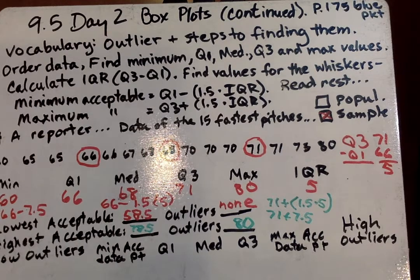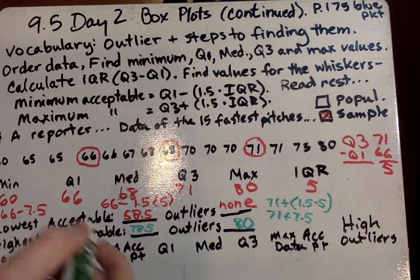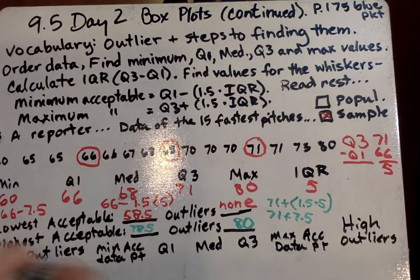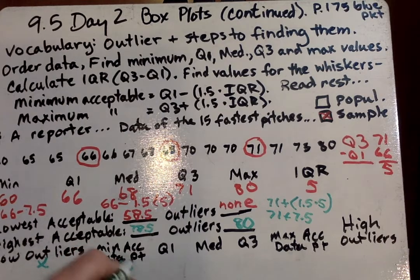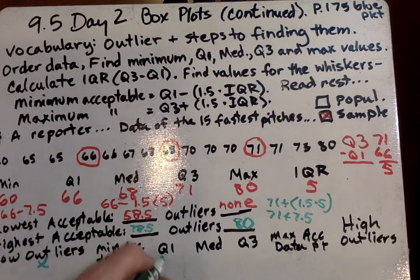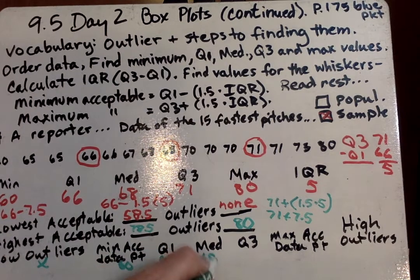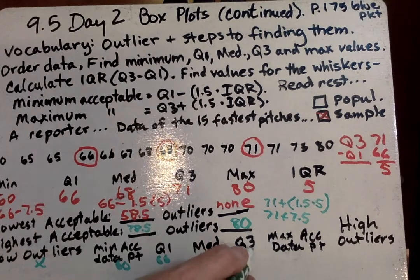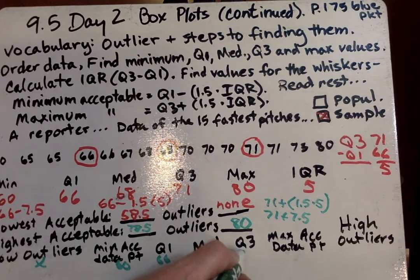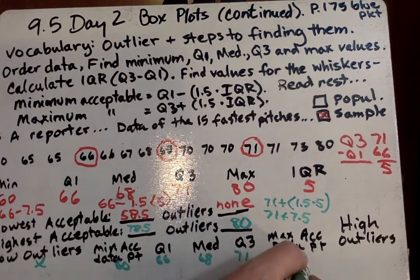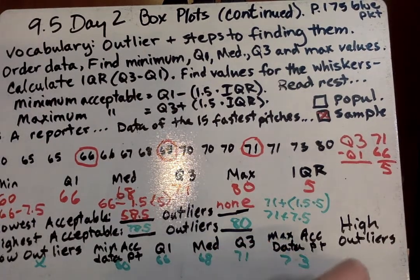Next, we are going to go ahead and do our minimum acceptable data. It's going to be 60. Low outliers, there's none. This is going to be 60. Quartile 1, we can just copy from up there, 66. Median is 68. Quartile 3 is 71. Maximum acceptable data is 73. High outliers, 80.